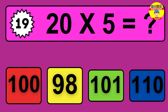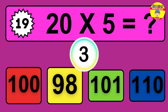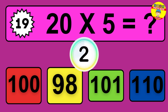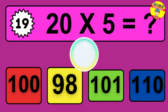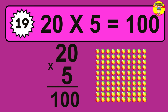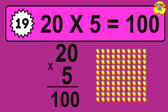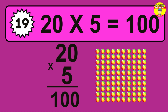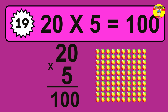Question nineteen: 20 times 5 equals what? The answer is 20 times 5 is 100. So how many balls do we have? 100 balls.